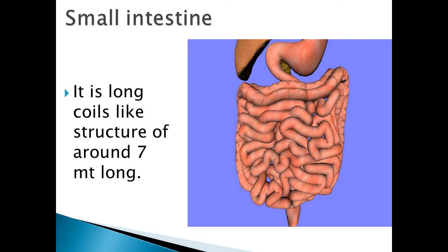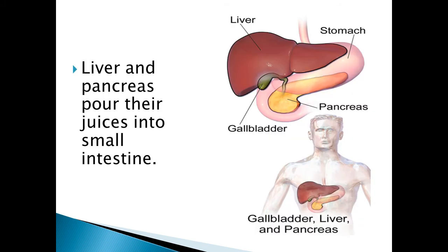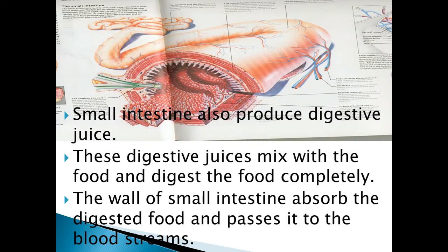Small intestine. From the stomach, the partially digested food comes to the small intestine. It is a long coil-like structure of about 7 meters long. Liver and pancreas pour their juices into the small intestine. Liver secretes bile juice that is stored in the gallbladder and pancreas secretes pancreatic juice. The bile juice from the gallbladder and pancreatic juice mix with the food in the small intestine and help in the process of digestion. Small intestine also produces digestive juice; this digestive juice mixes with the food and digests food completely. The wall of the small intestine absorbs the digested food and passes it to the blood stream.